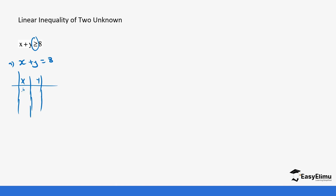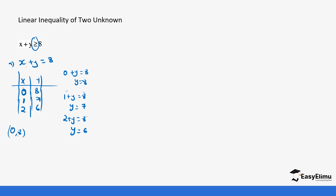When x is zero, you input that into the equation: zero plus y equals 8, meaning y equals 8. If x is 1, then 1 plus y equals 8, which gives y equals 7, because 1 goes to the other side and subtracts. If x equals 2, then 2 plus y equals 8, so y equals 6. So you have three points: (0, 8), (1, 7), and (2, 6).